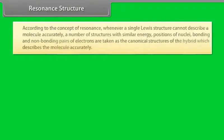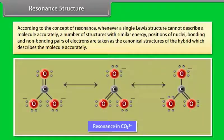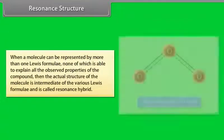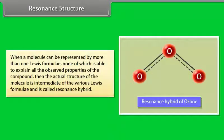Resonance structure. According to the concept of resonance, whenever a single Lewis structure cannot describe a molecule accurately, a number of structures with similar energy, positions of nuclei, and bonding and non-bonding pairs of electrons are taken as the canonical structures of the hybrid. When a molecule can be represented by more than one Lewis formula, none of which is able to explain all observed properties, the actual structure is intermediate of the various Lewis formulae and is called the resonance hybrid.